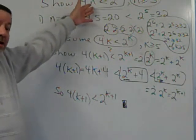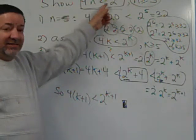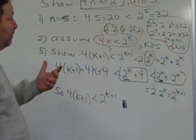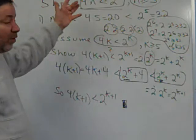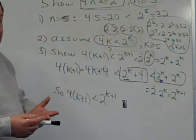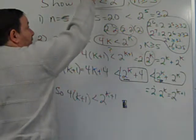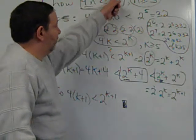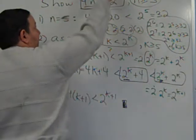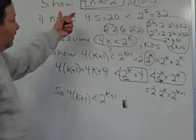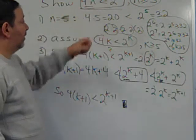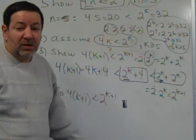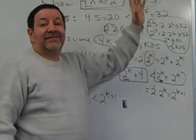We now know that 4 times any integer is less than 2 to that integer, as long as the integer is 5 or above. If it's less than 5, it may not work. Try 4, try 3 — it won't work. It might work for 1: 4 times 1 is 4, and 2 to the 1 is 2, but 4 is not less than 2. For n=2: 4 times 2 is 8, and 2 squared is 4 — 8 is not less than 4. So it only works for 5 and above.